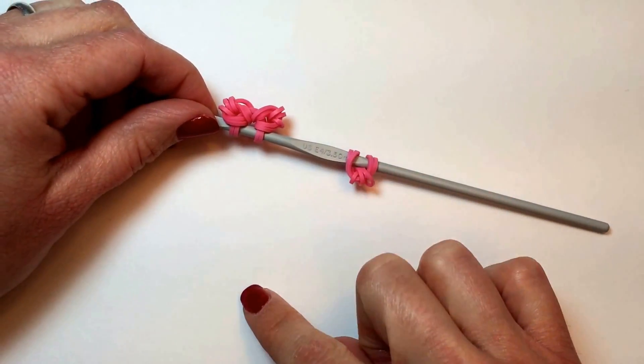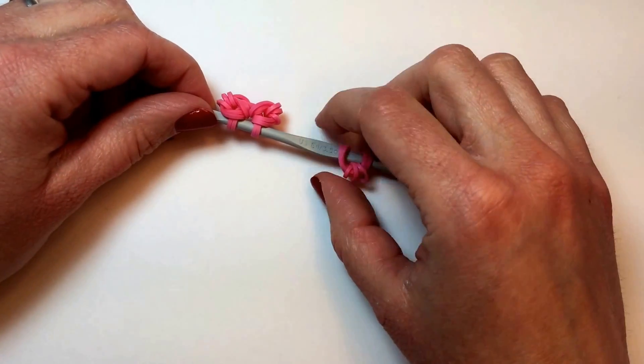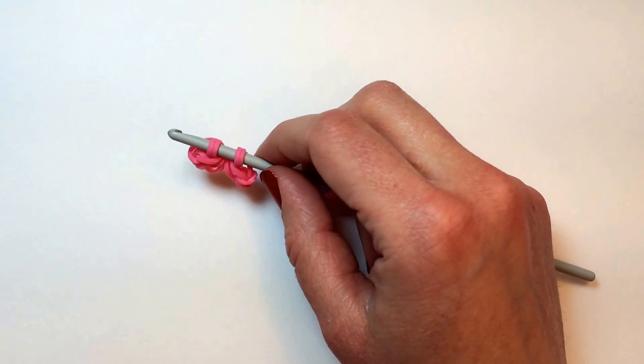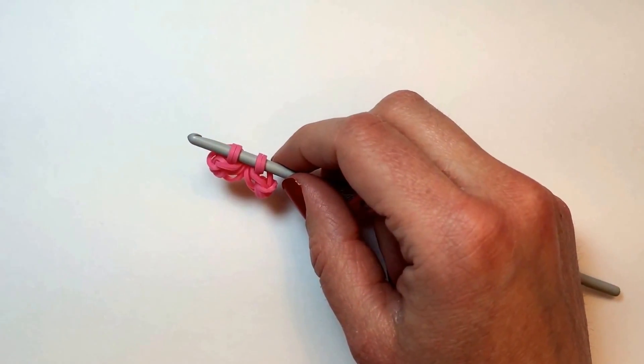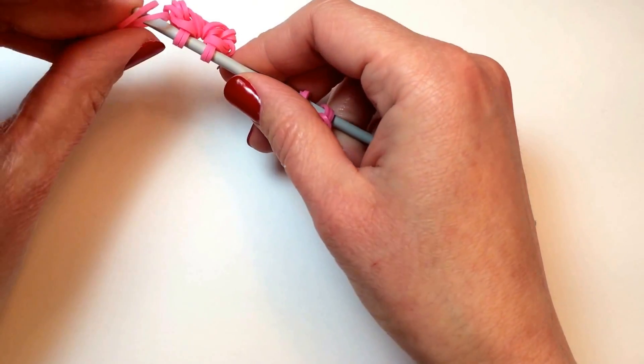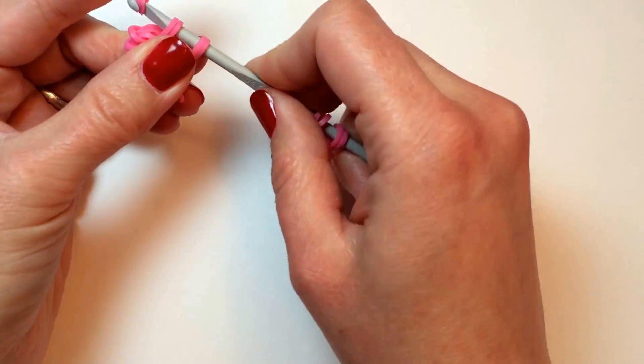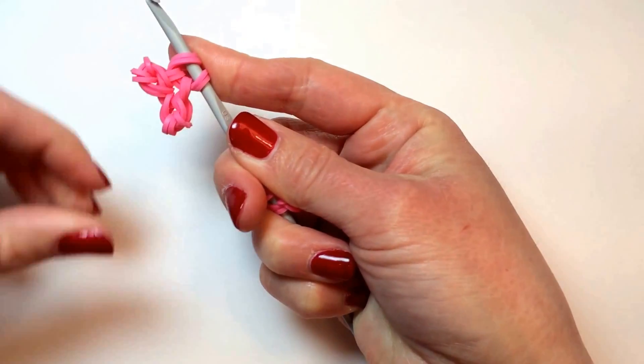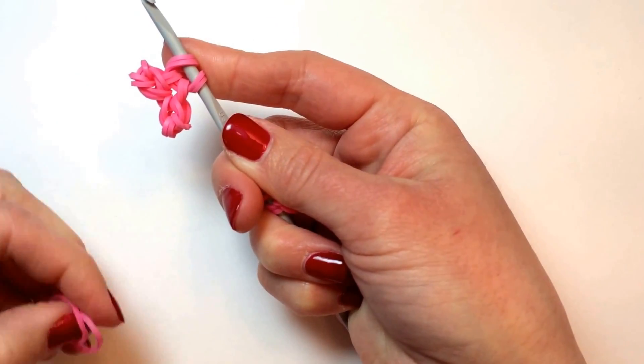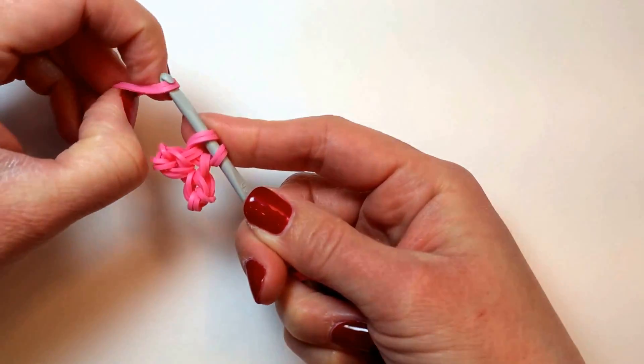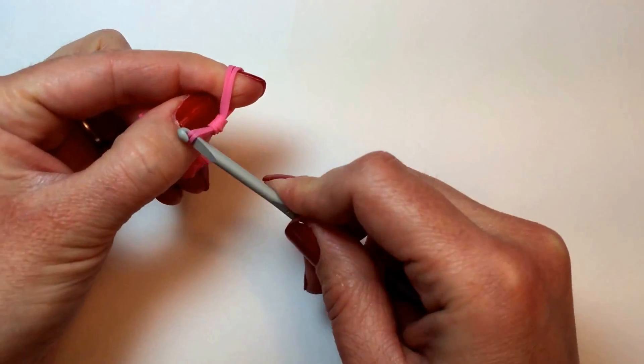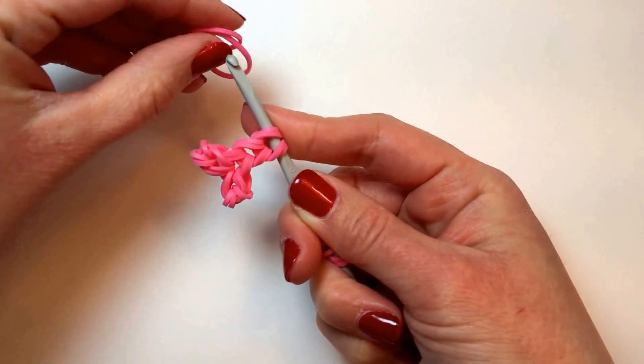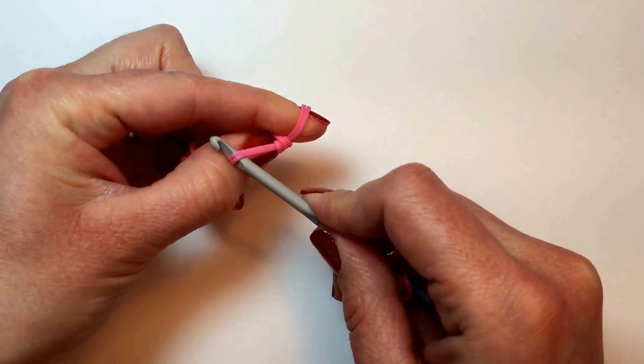Now we're going to make a chain here that's nine pairs of rubber bands long. This is your first, so we're going to add eight more. So if that was one, that makes this two, three...